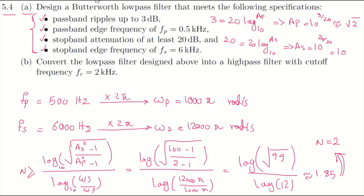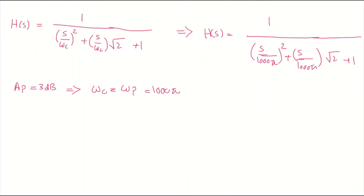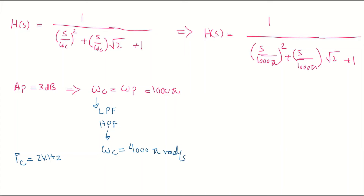In part B of question 5.4, we want to convert the low-pass filter we designed into a high-pass filter with a cutoff frequency of 2 kHz. The low-pass cutoff frequency is 1000π, and for the high-pass filter, the angular cutoff frequency is 2000 × 2π, which equals 4000π radians per second.